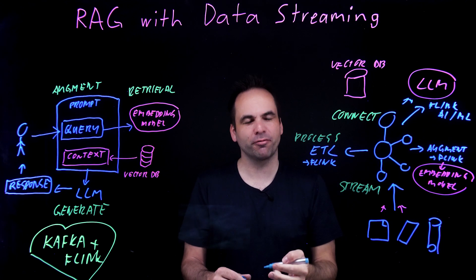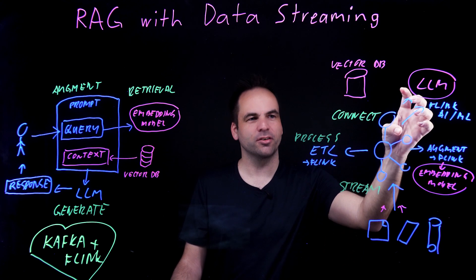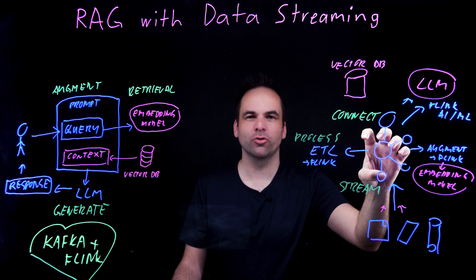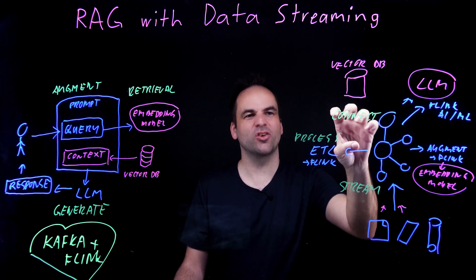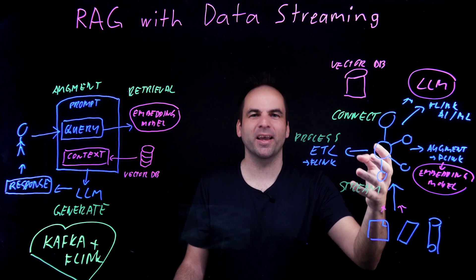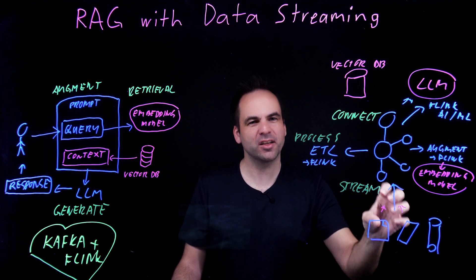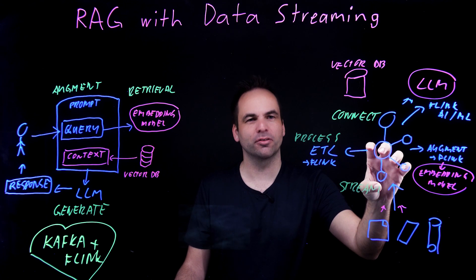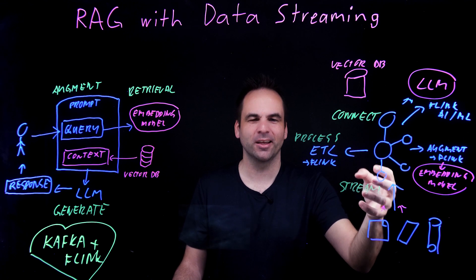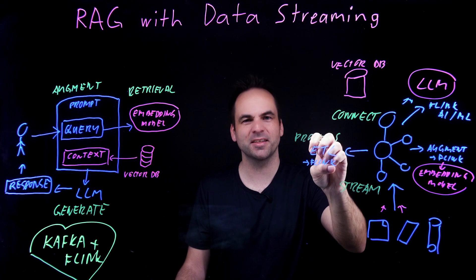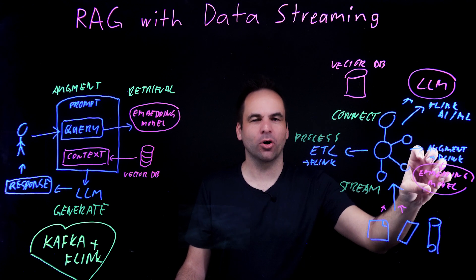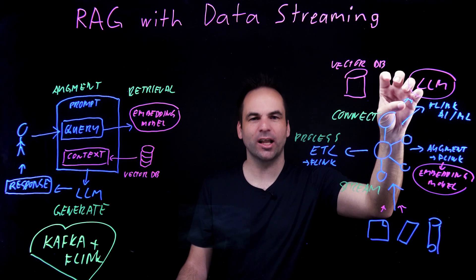In summary, in this architecture, you see how data streaming streams all the data in from real-time and non-real-time systems using out-of-the-box connectors. If there is no connector, you can use APIs like Java, Python, JavaScript, or HTTP — all part of a complete data streaming platform. After ingestion, because you also need to curate the data, you use Flink for streaming ETL processes or for real AI capabilities like calling an embedding model or feeding the right context into a large language model.